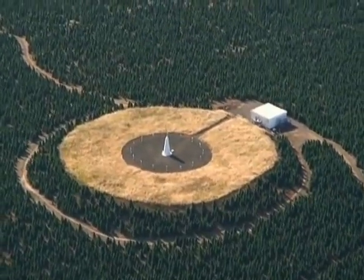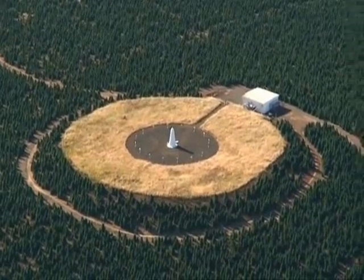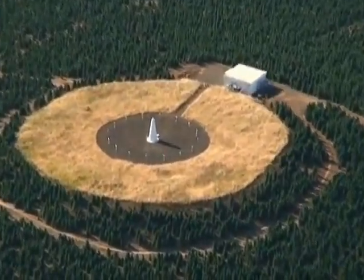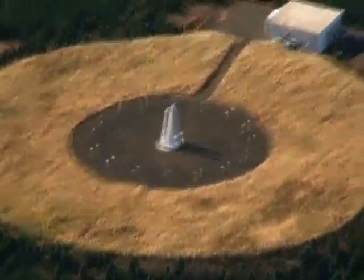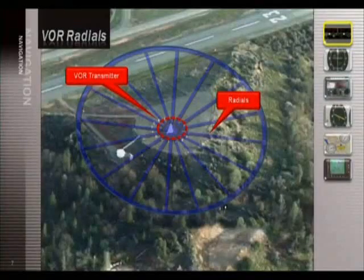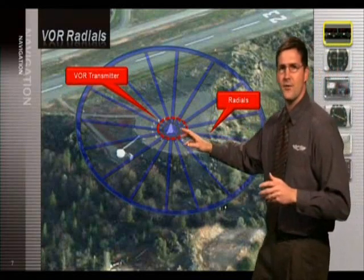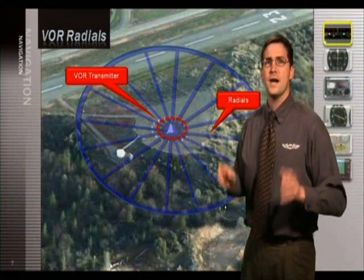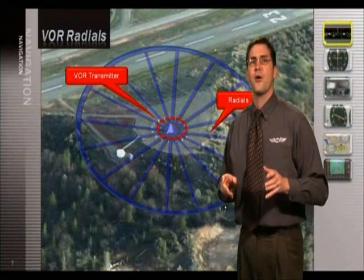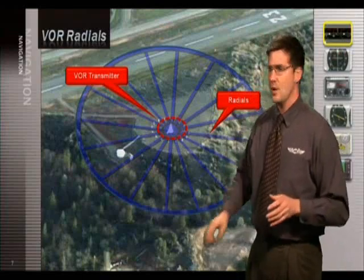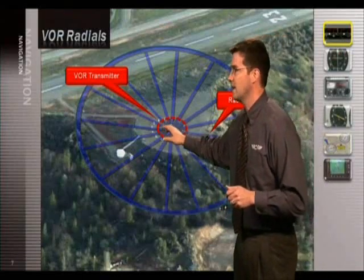These signals are referred to as radials from the VOR transmitting station. To understand this concept, think of a hub of a wheel and the wheel spokes, or in this case the radials, projecting outward from the hub. Now the VOR radials are all considered to be from the station. Here's the VOR station or the hub of the wheel right here at the center.